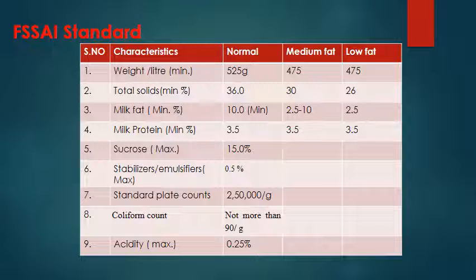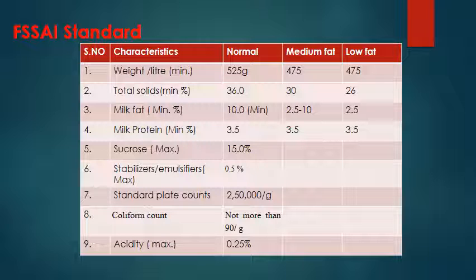Here is the FSSAI standard. As per the Food Safety and Standard Authority of India, there are different kinds of ice cream. The general regulation and standard for normal, medium and low fat ice cream: weight should be 525 grams per liter for normal, 475 for medium and low fat. Total solids minimum: 36% in normal, 30% in medium fat, and 26% in low fat ice cream. Milk fat should be minimum 10% in normal, 2.5–10% in medium, and 2.5% in low fat. Milk protein should be minimum 3.5% uniformly in all ice cream.